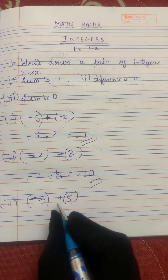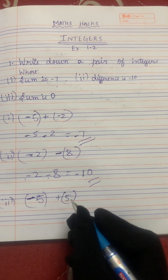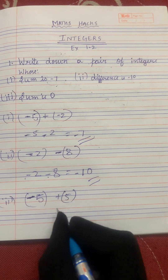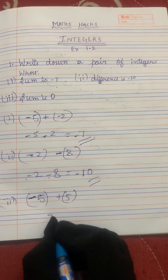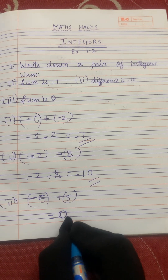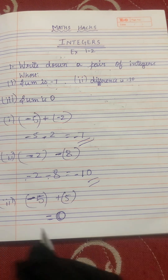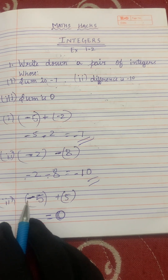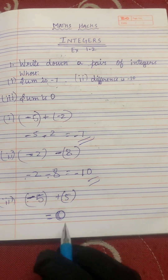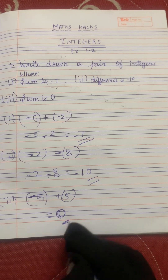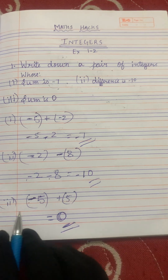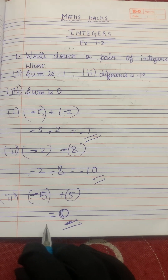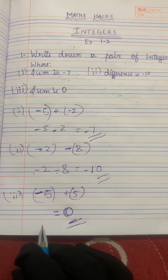Minus 5 plus 5. Plus into minus is minus, so 5 minus 5 gives you 0. Because we have the minus sign, plus into minus is minus, so 5 minus 5 gives you 0. But we can't put any sign because 0 doesn't have any sign.